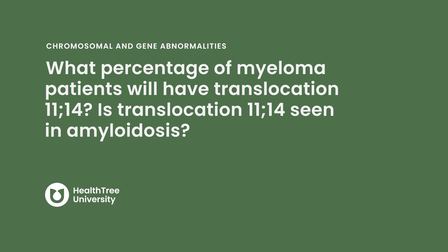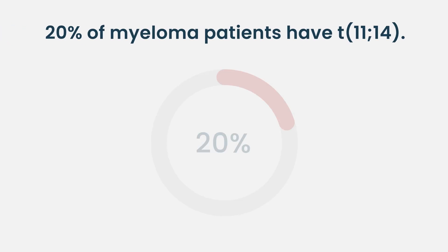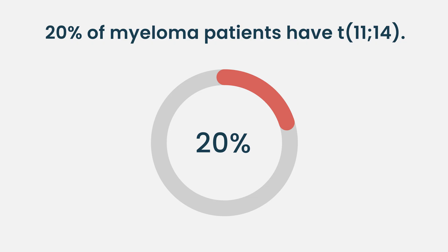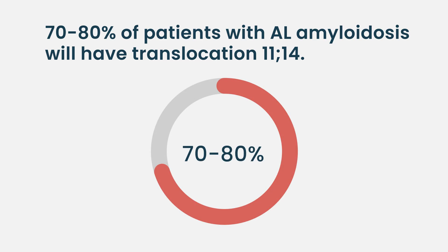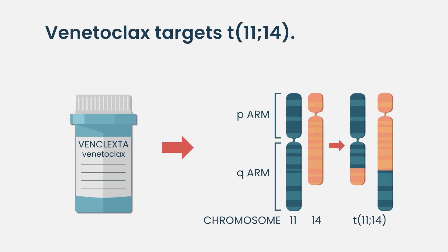What percentage of myeloma patients have translocation 11;14, and is it seen in amyloidosis? Translocation 11;14 is found in about 20% of all myeloma patients — roughly every fifth patient. However, in AL amyloidosis, which is closely related to myeloma, the expression rate is about 70 to 80%. Venetoclax has been tested in lymphoma against this translocation, and also tried in myeloma patients expressing t(11;14) with some responses.